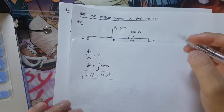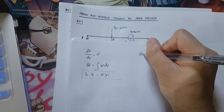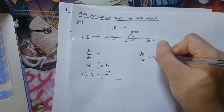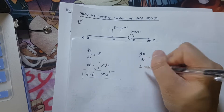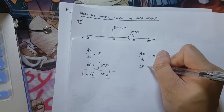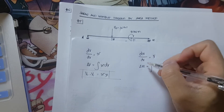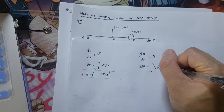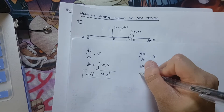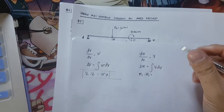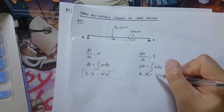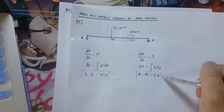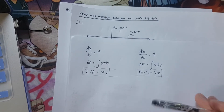Next, the derivative of moment with respect to x is equivalent to the shear. So the change in moment is equivalent to the integral of shear dx, meaning M2 minus M1 is equivalent to shear times x. We will be using this equation.